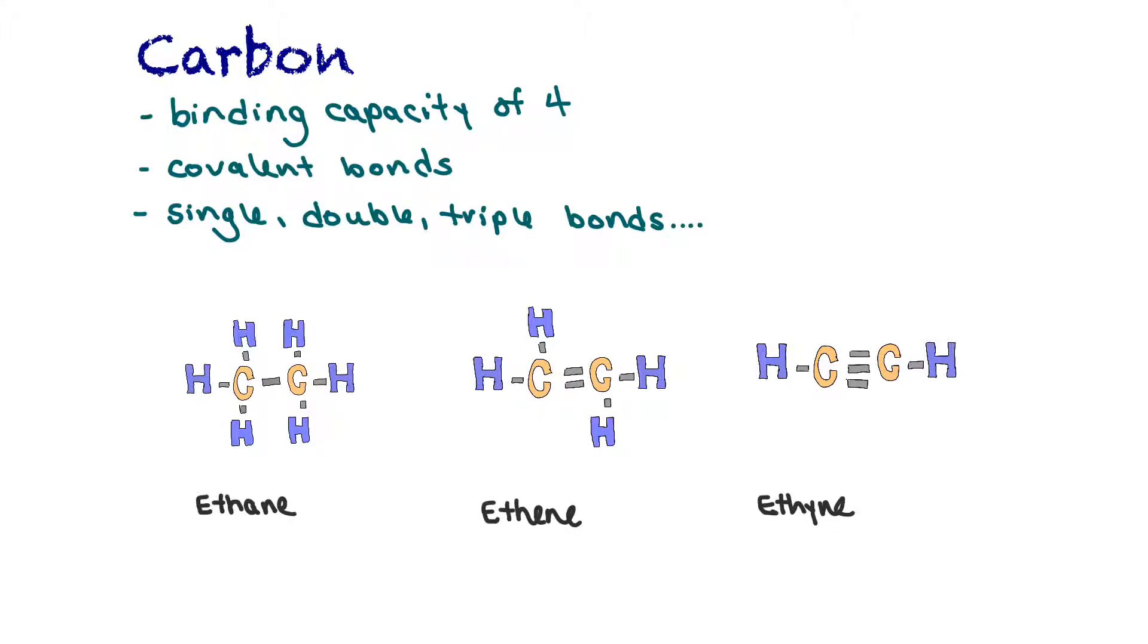In our first example, we have all single bonds between the carbons. This is ethane, so two carbons and then a single bond. The rest of the spaces are filled up with hydrogen atoms. Ethene has a double bond between the carbon atoms, so it can't bind with as many hydrogen atoms. This molecule is C2H4, while ethane was C2H6. Our third one is ethyne. In this case, carbon shares three electron pairs with each other and we have a triple bond. That only allows them to bind with one hydrogen atom each, so ethyne is C2H2.